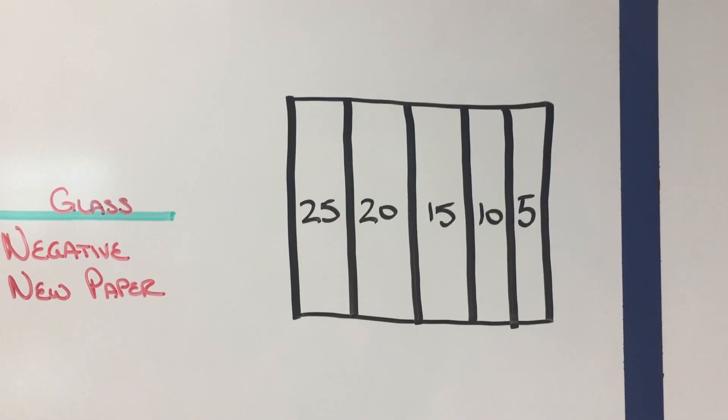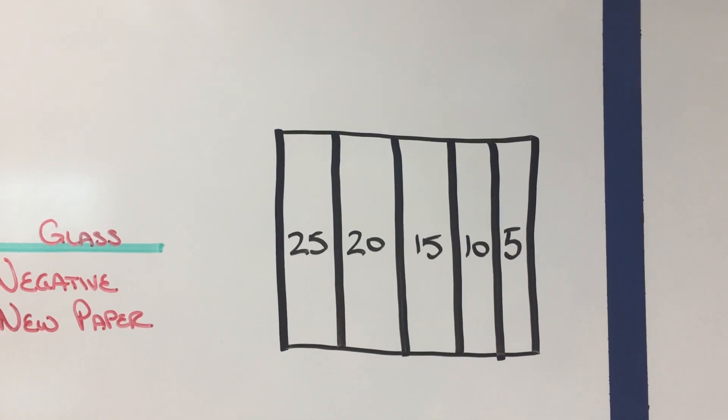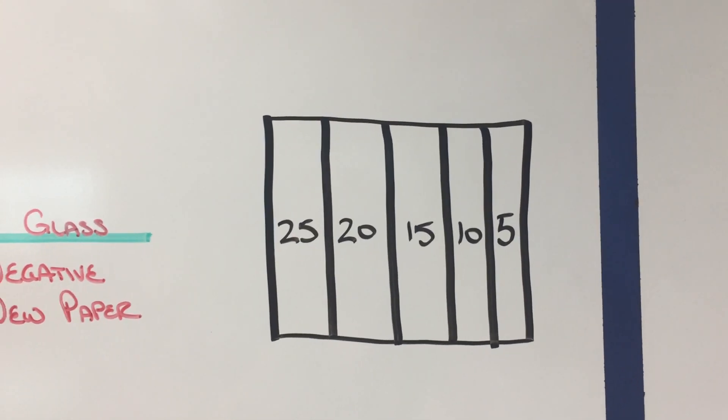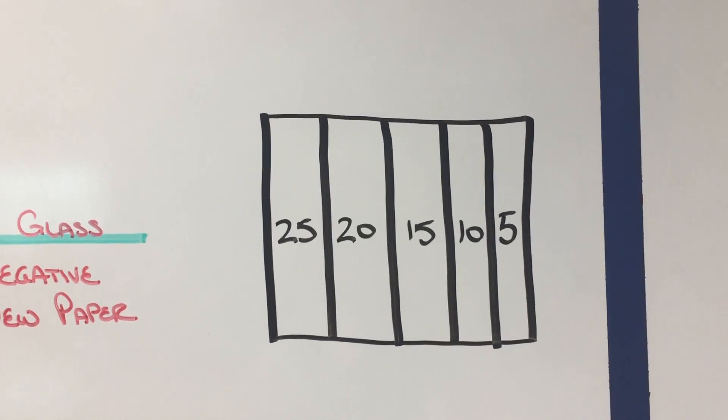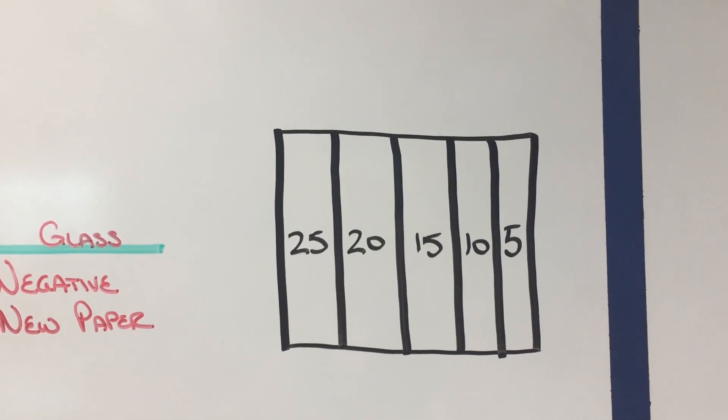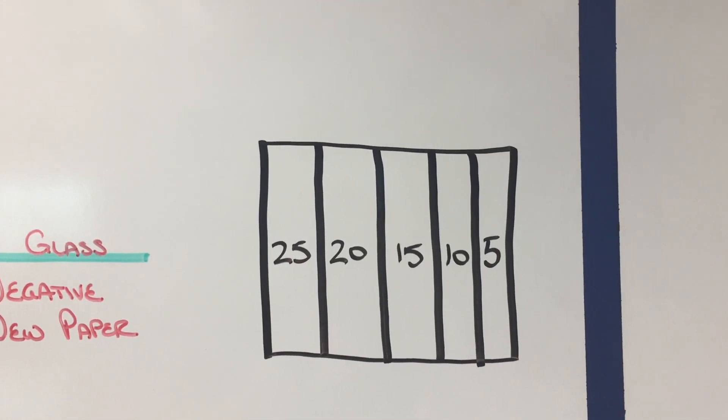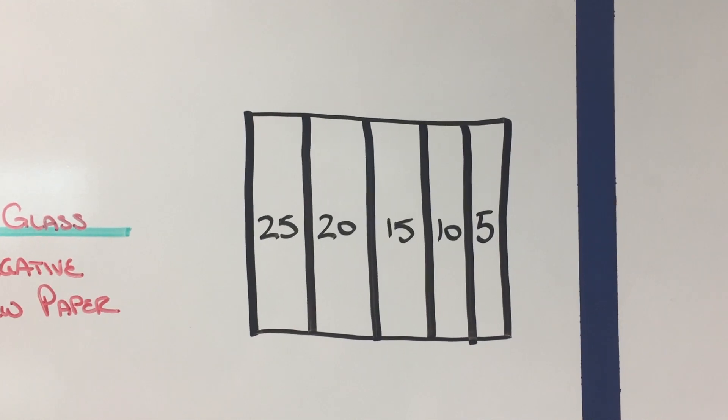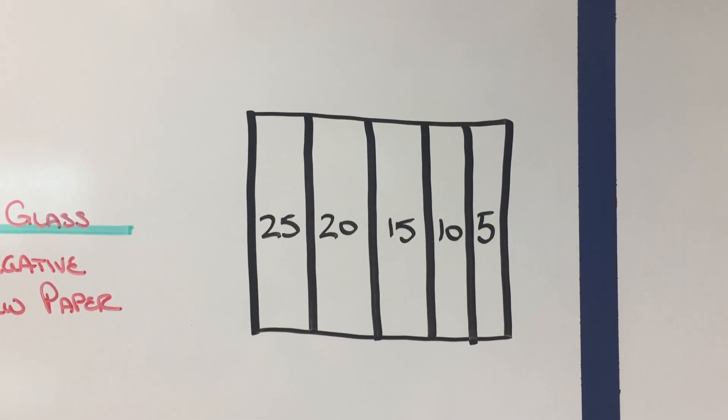This is going to give us a pretty wide range of exposures and we will use it as a guide so we can look at your test strip to determine what your time should be. Maybe it ends up being something that needs to be in between 10 and 15 seconds and we might tell you to do something like 13 seconds. So then you would set your timer for 13 and you would expose your final positive for that amount of time.